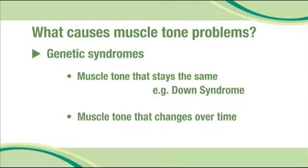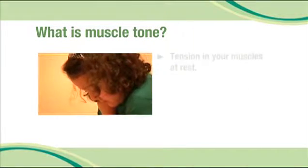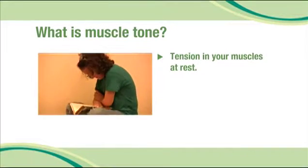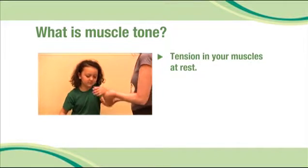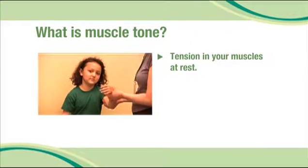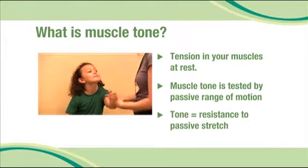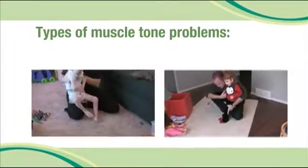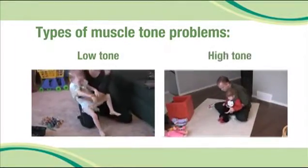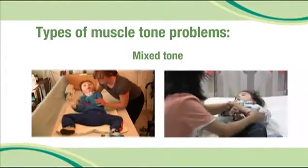Other syndromes or diseases, such as muscular dystrophy, cause muscle tone to change over a person's lifetime. Because muscle tone is the amount of tension in your muscles when they are at rest, to find out how much muscle tone a child has, the doctor or therapist will move a part of the body without the child's help. This is called testing passive range of motion. In a relaxed person with normal muscle tone, there is very little resistance to this passive movement. There are two basic kinds of muscle tone problems: low muscle tone and high muscle tone. Mixed muscle tone is any combination of high, low, and normal muscle tone, so there are many different kinds of mixed muscle tone.